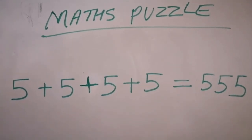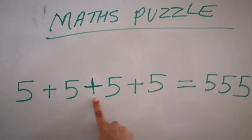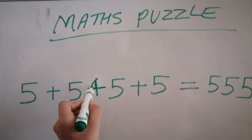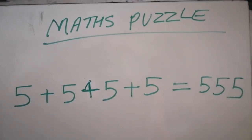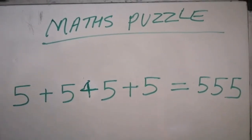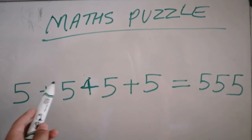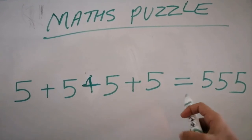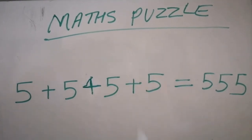As you can see, this plus right here—we will just add one line. And now, as you can see, it is 5 plus 545 plus 5 equals 555. So there we go, guys.